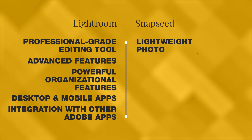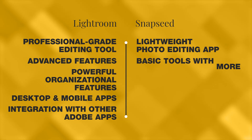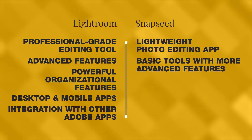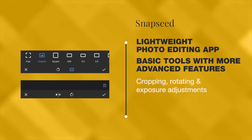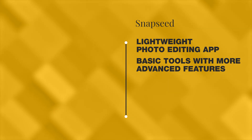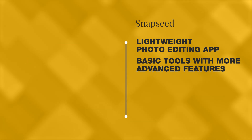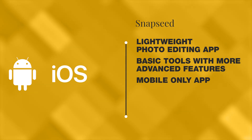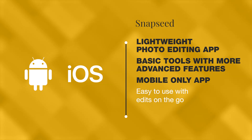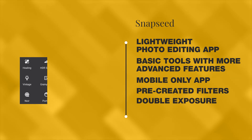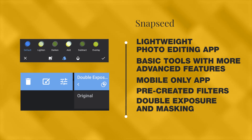Snapseed, on the other hand, is a more lightweight photo editing app that is geared towards casual users. It offers a range of basic editing tools such as cropping, rotating and adjusting exposure, as well as some more advanced features like selective adjustments and filters. It is available only as a mobile app and is designed to be easy to use for quick edits on the go. It has pre-created filters, double exposure and masking features which can be used for creative purposes.